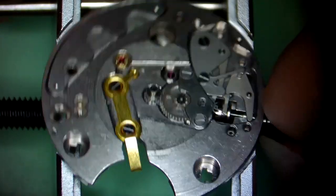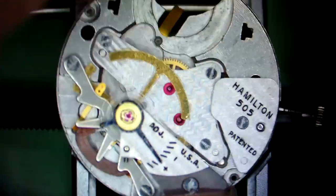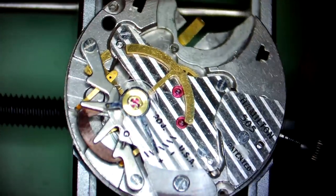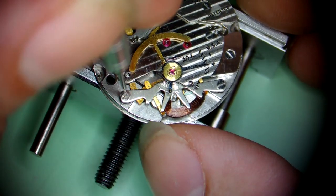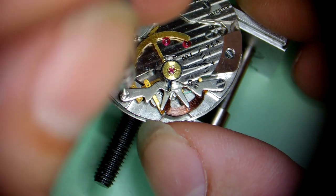You'll see that it's a pretty simple movement, as movements go. There's a lot less pieces in it. Once the balance plate and main plate come off, you're going to see that there's not many gears in there, which is kind of cool.